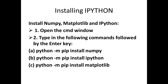To install IPython, follow these steps. Open the command window and type the following command followed by the Enter key: 'python -m pip install numpy'. Press Enter. You can see a few files being downloaded.